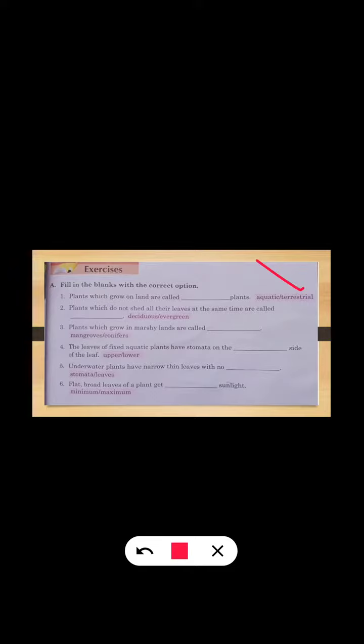The third one is: Plants which grow in marshy lands are called [blank]. The answer is mangroves. Fourth one is: The leaves of the fixed aquatic plants have stomata on the [blank] side of the leaf - upper side of the leaf. So the answer is upper.